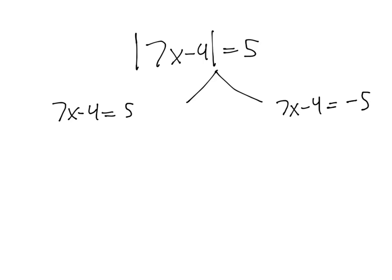So now we have two linear equations that we solve separately. So here I'm going to add 4 to both sides. We have 7x equals 9 divided by 7. I get x equals 9 sevenths.